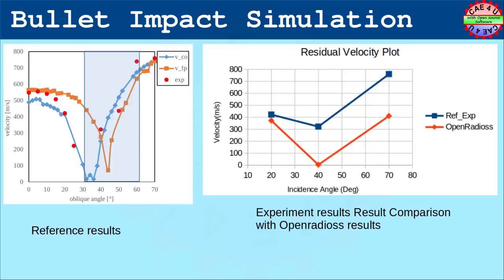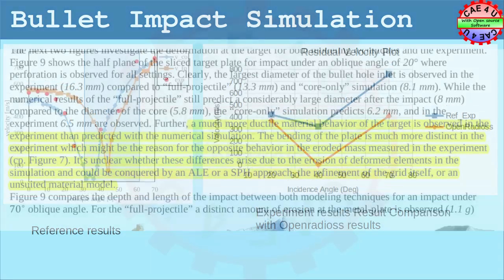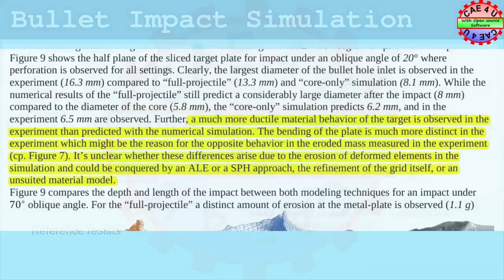Let us compare FEA results with the published results. First, when we look the residual velocity value, we observe that though the values are half, the trend is same. As the angle of inclination increases, the ability of the projectile to penetrate the plate reduces. Partly because the effective increase in thickness and the tendency to deflect the projectile. The deviations are attributable to the geometric and material property variations.